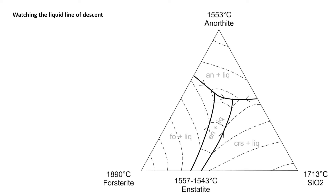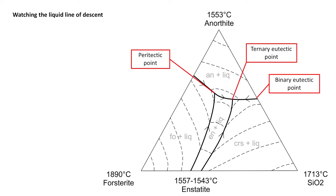If we take a look at an example, here we have forsterite, anorthite, and silica as cristobalite, and enstatite between forsterite and silica on that bottom margin. We have our binary eutectic points on the side, just as we did in the previous lesson.